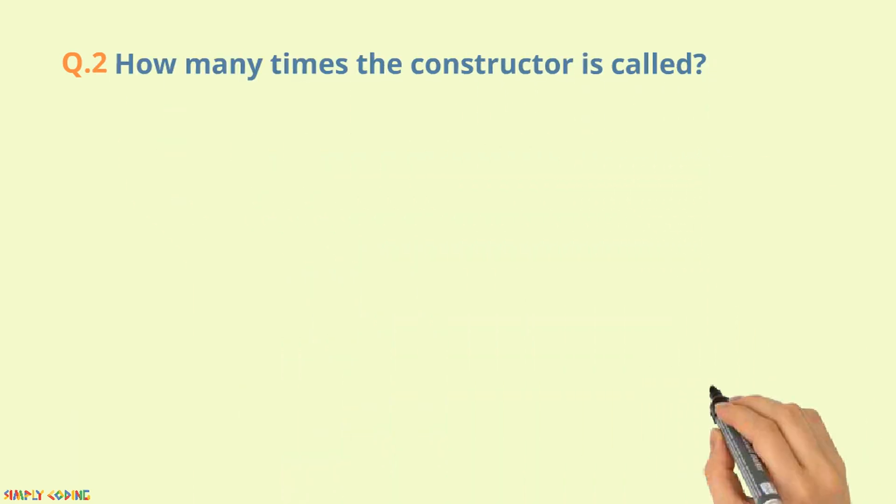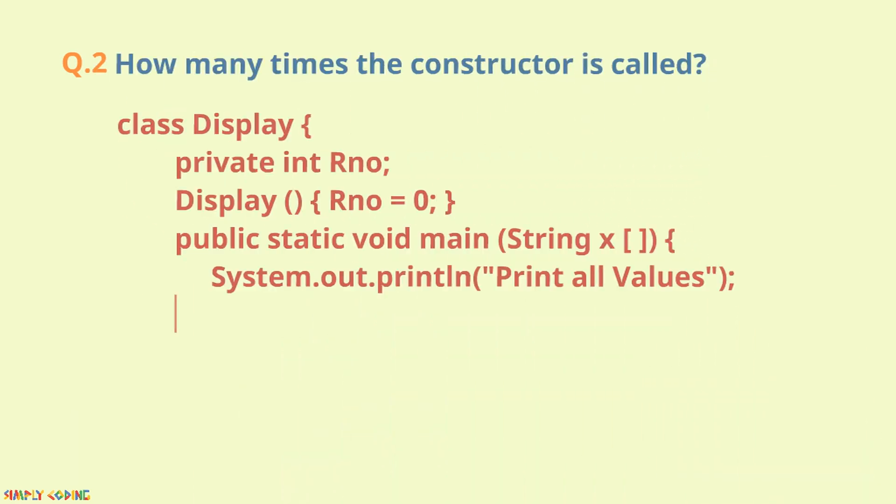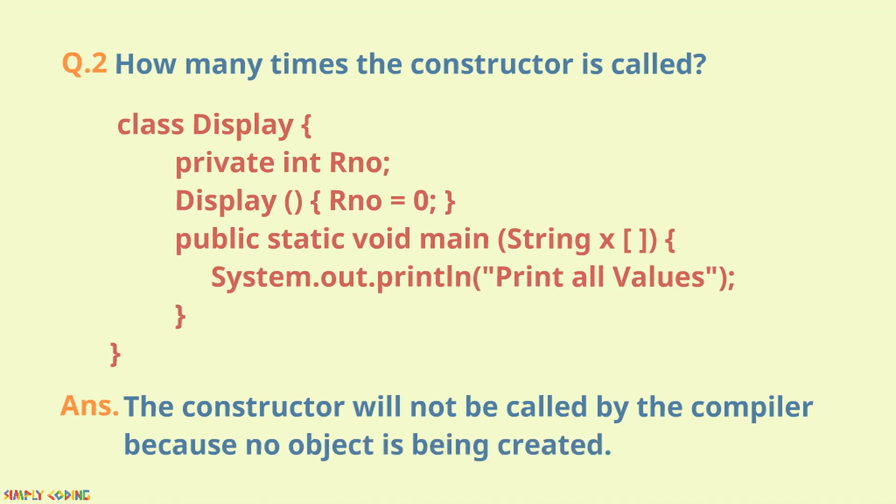Second is where a code segment is given and you are asked how many times a constructor is called. Like here, no object is instantiated so the constructor is not called at all.